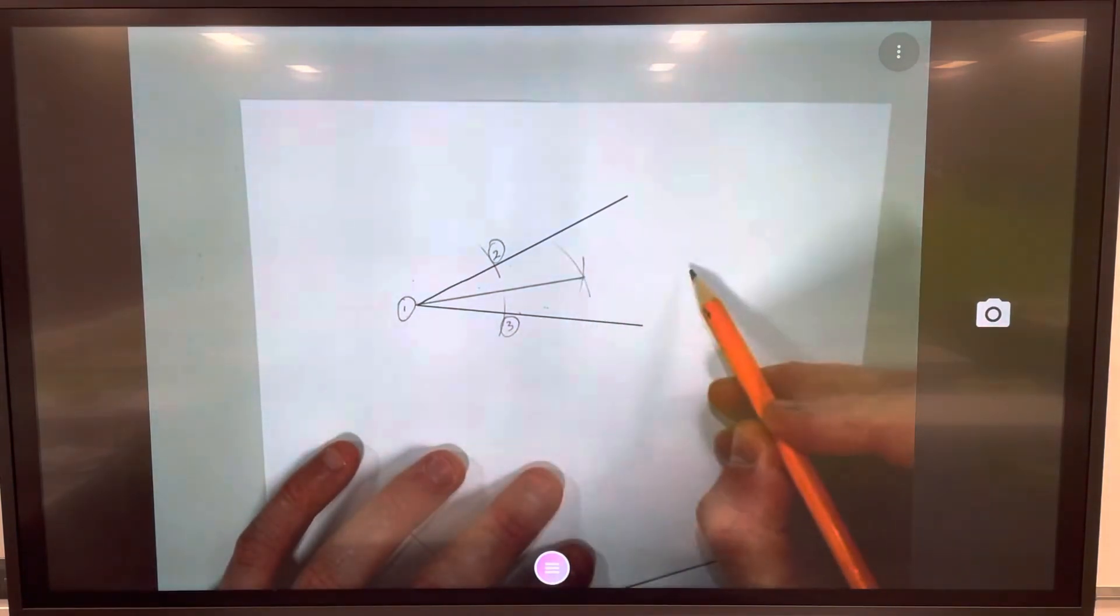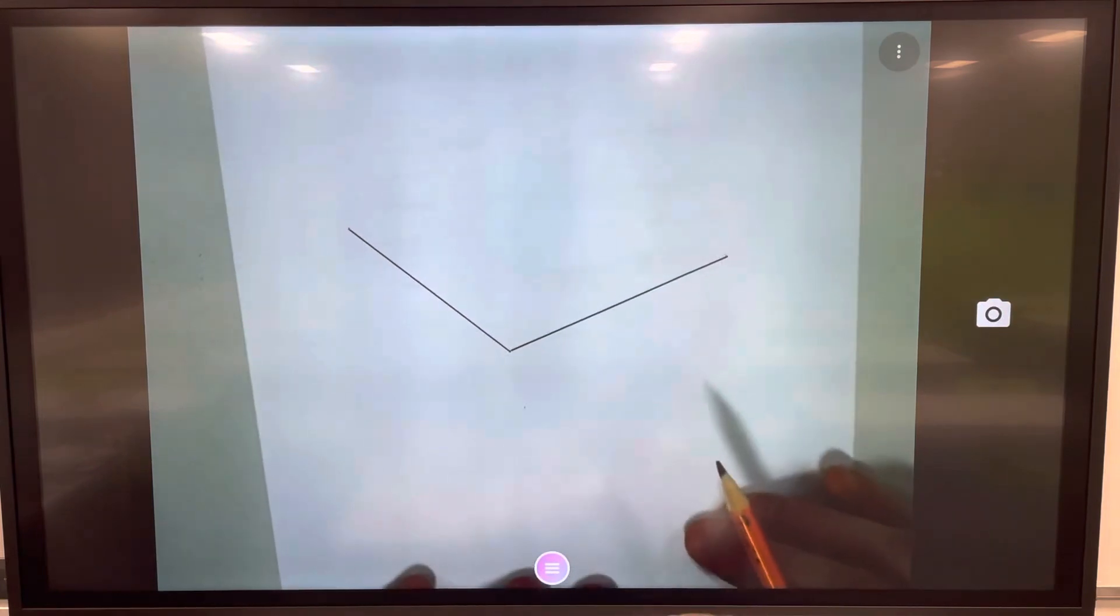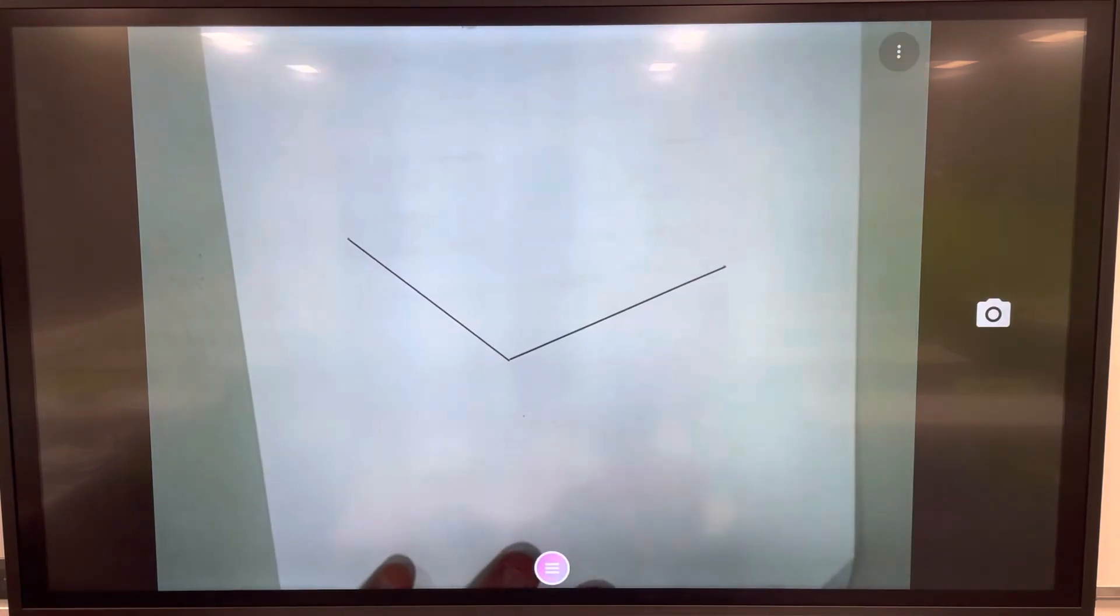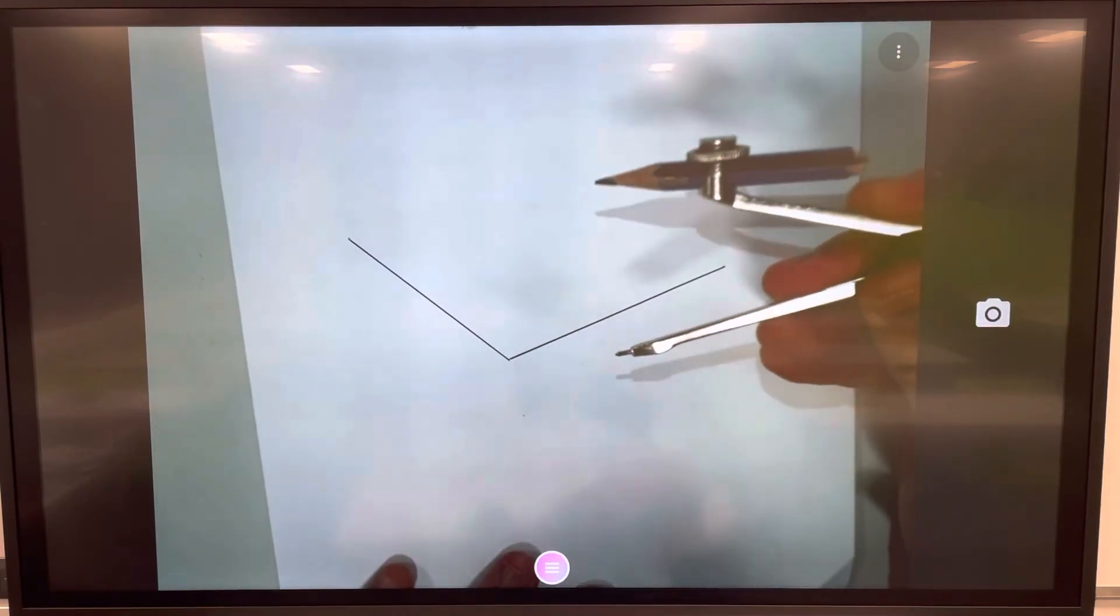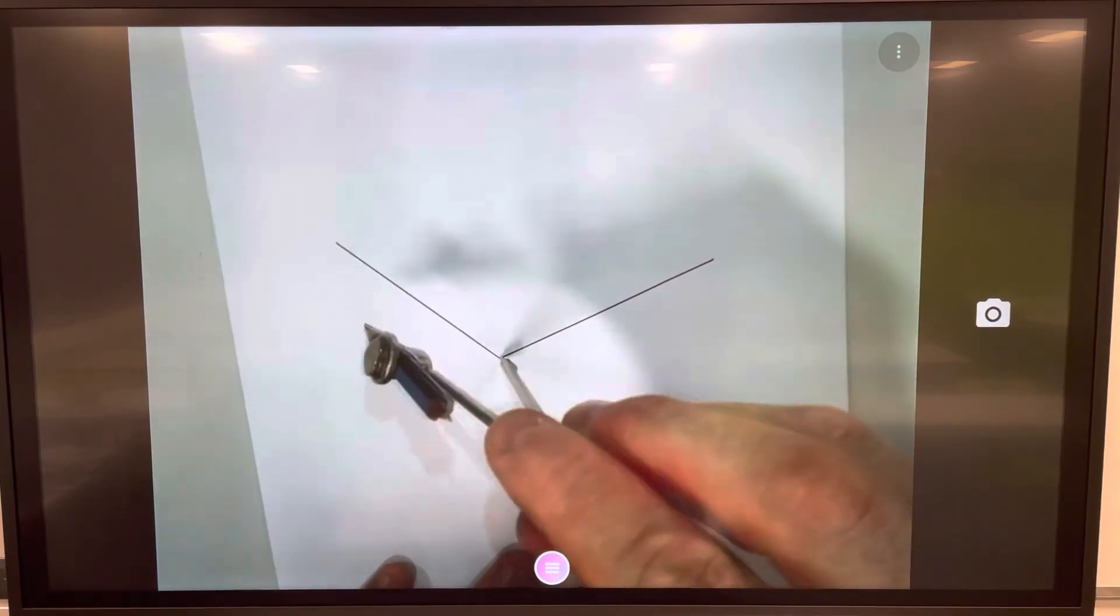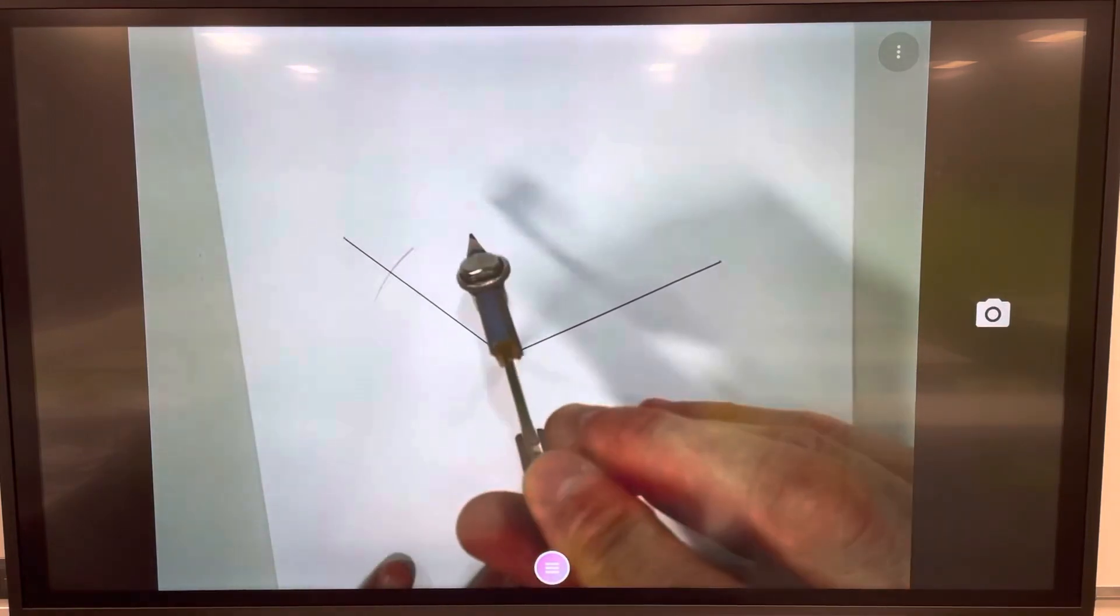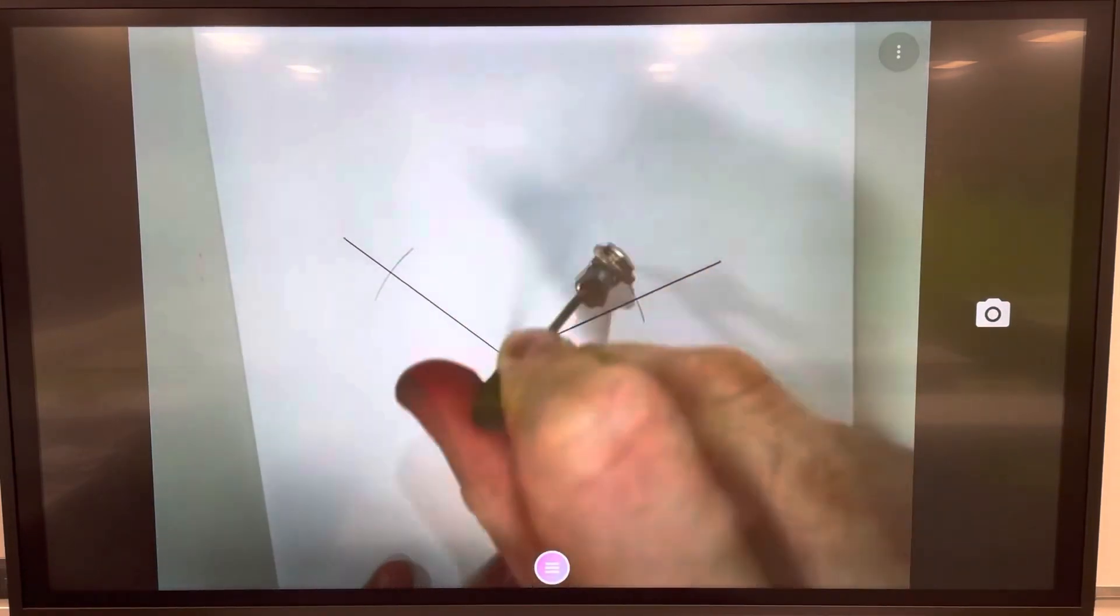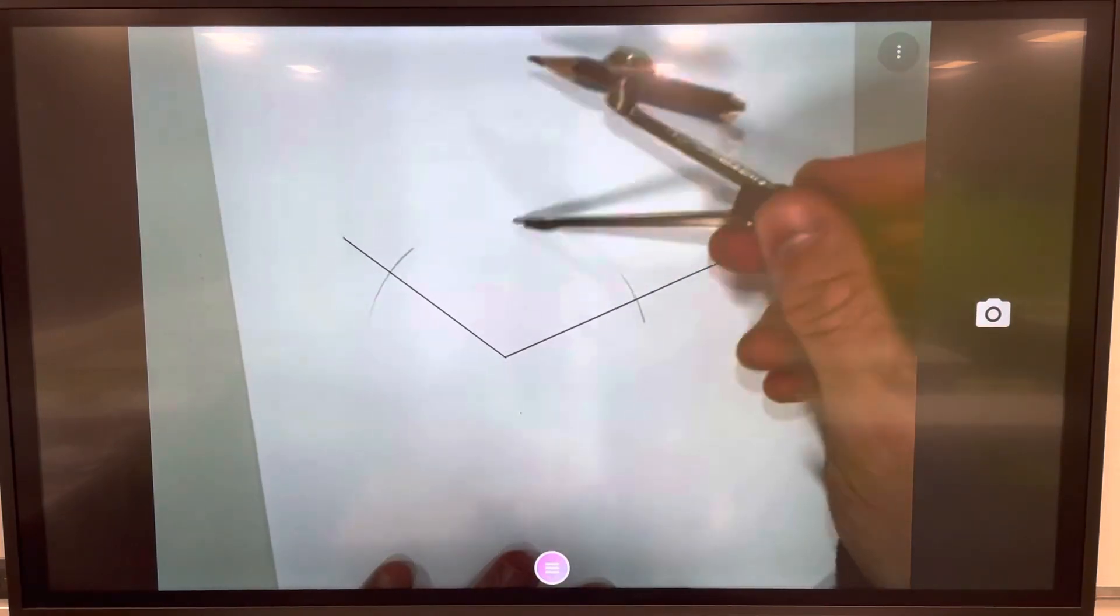An obtuse angle is exactly the same. This time I've got my compass, or my pair of compasses I should say. I've got the sharp point where the two lines meet. If it was an acute angle then it would be the mouse's nose. I'm going to intercept through that line, intercept through that. Now we know roughly this line is going to be around here.